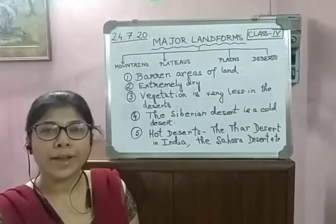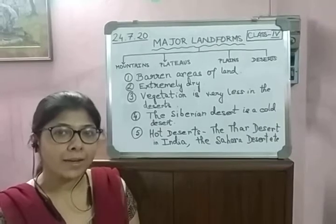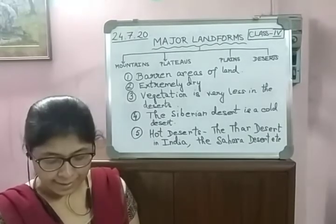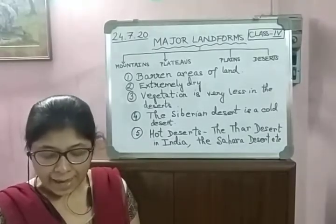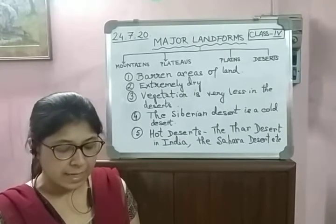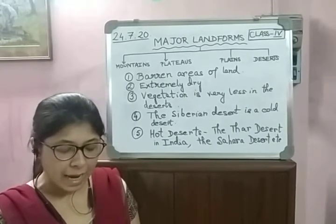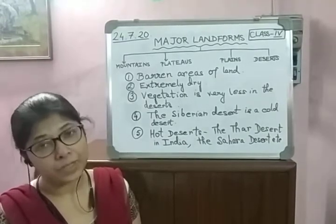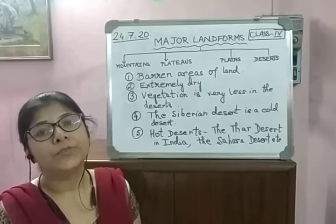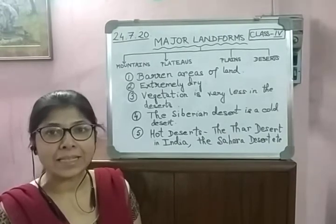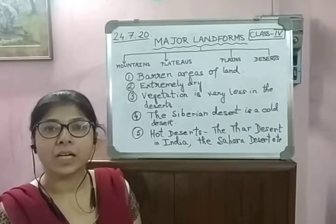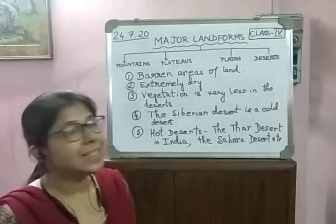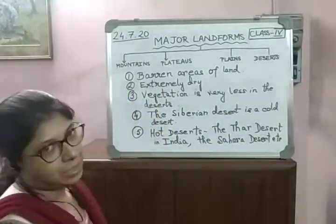Vegetation in these areas is very less due to scarcity of rainfall — there is no rainfall at all, so vegetation is very less in the desert. Cacti and other dry herbs like Kikar and Babul usually grow in the dry deserts of India.